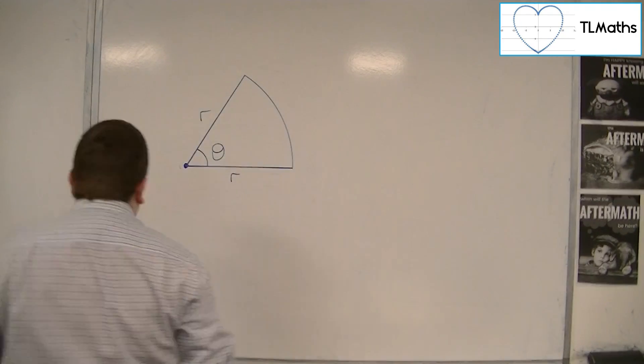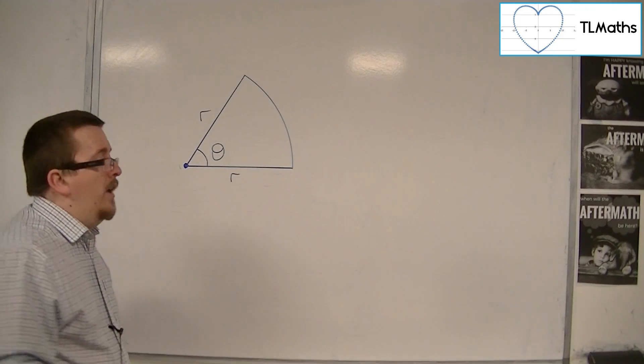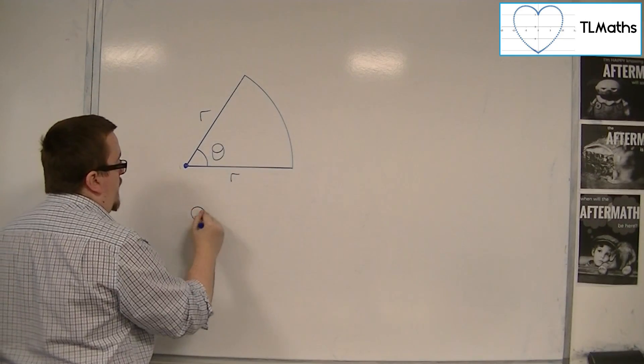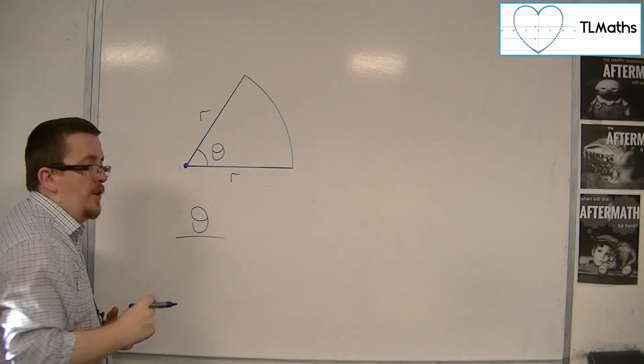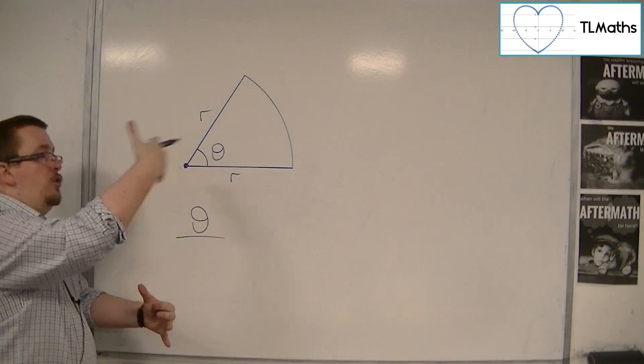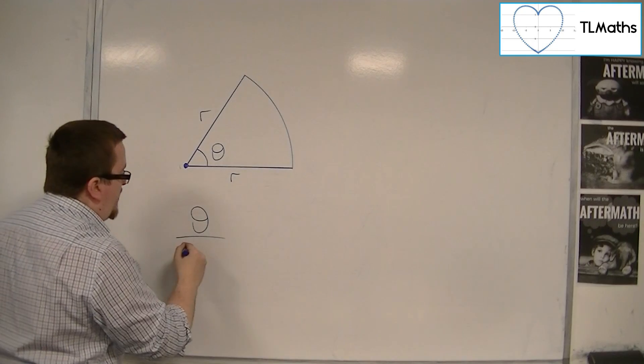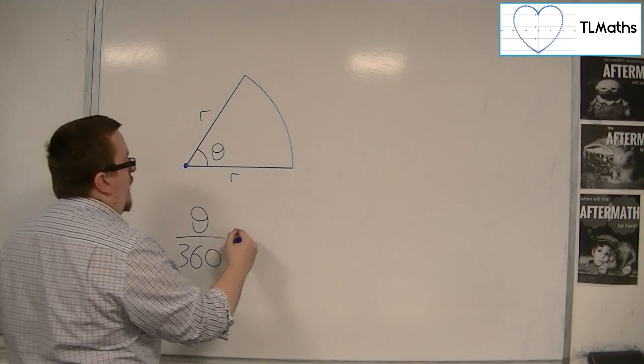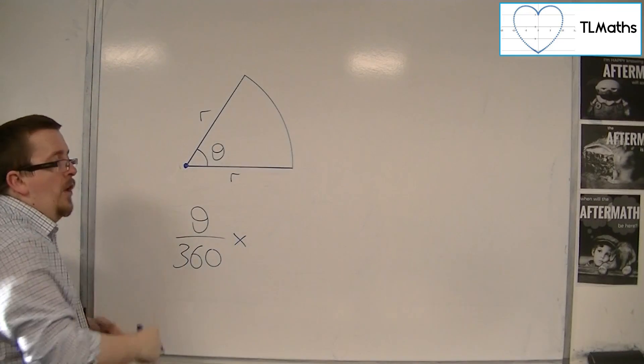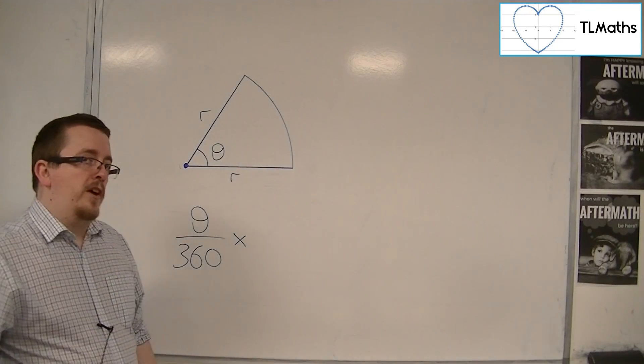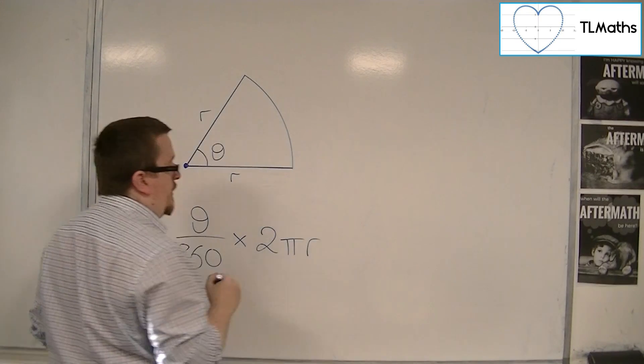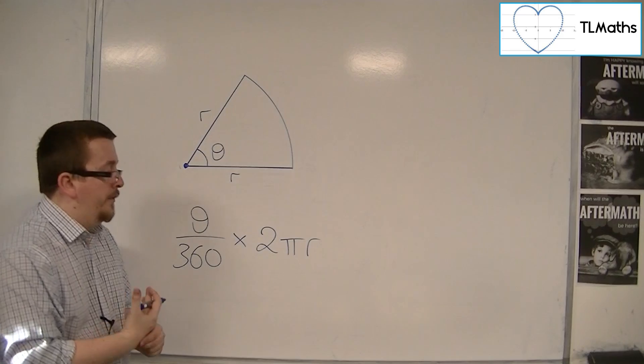Originally, when we were working in degrees, what I would have to do is I'd have to think about this angle as being a fraction of the total of 360 degrees all the way around. And then, that is the fraction of the circumference that I want to find. So, the circumference is 2 pi r. That's how I found the circumference.